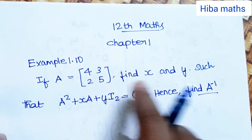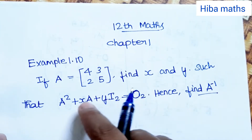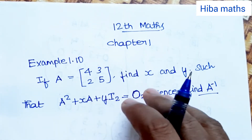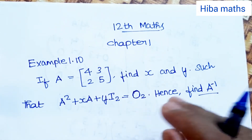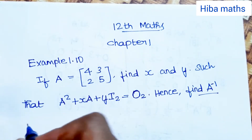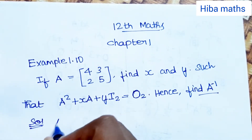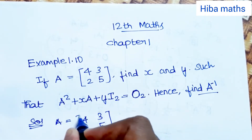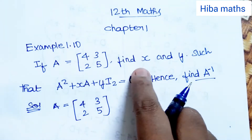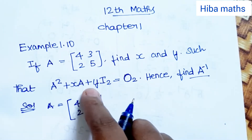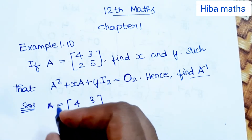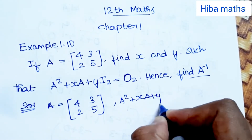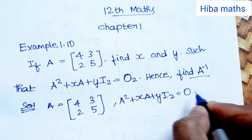So we can use A inverse — we can substitute A and A inverse values. The solution begins with A matrix value [4,3,2,5]. We need to find x and y using the equation A² + x·A + y·I₂ = 0.